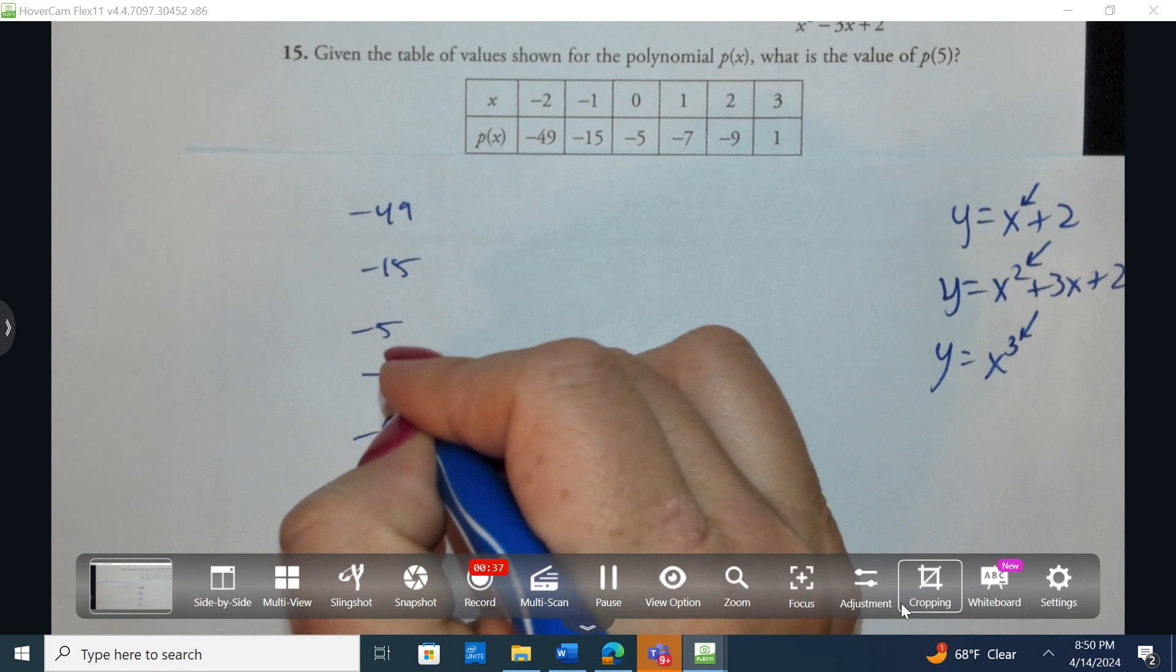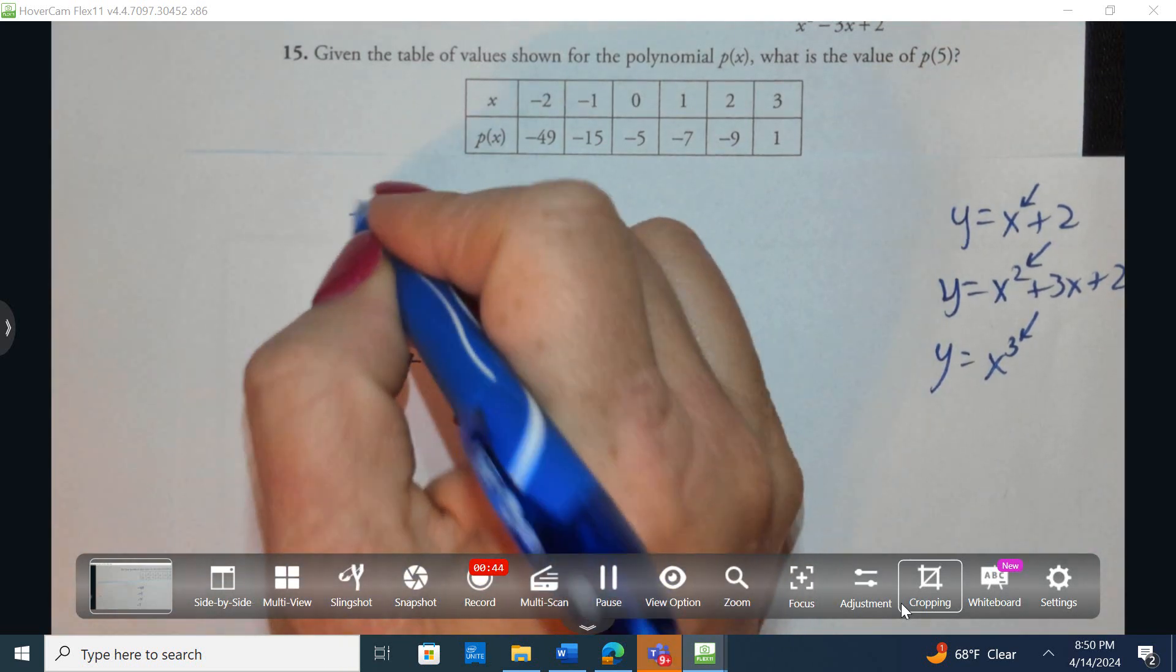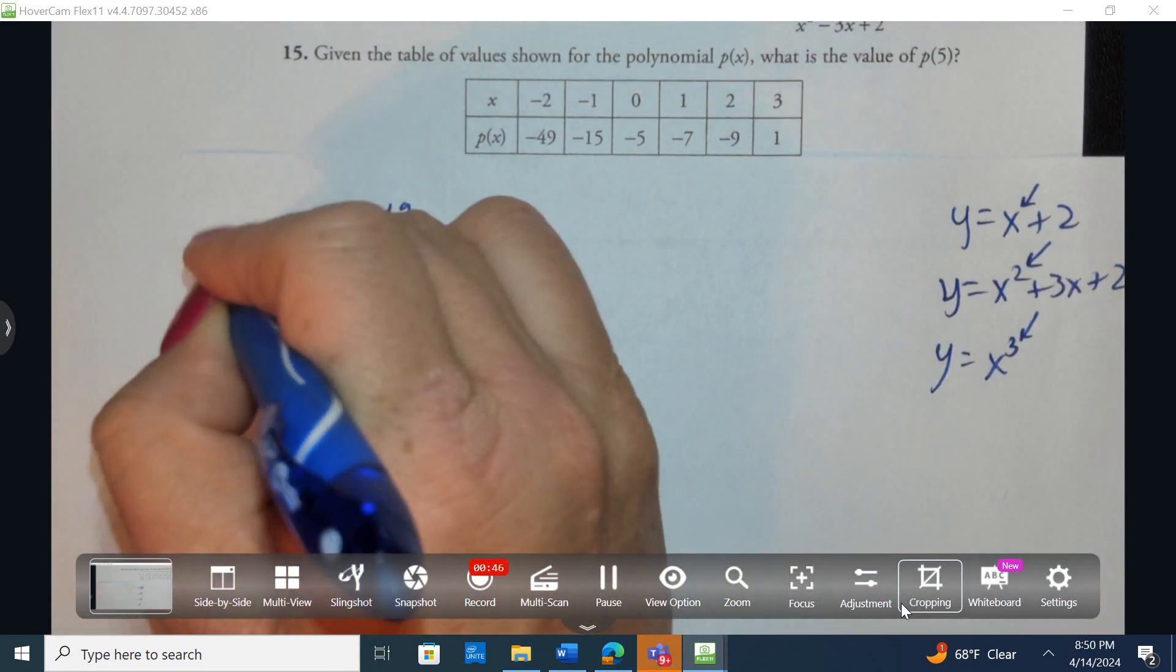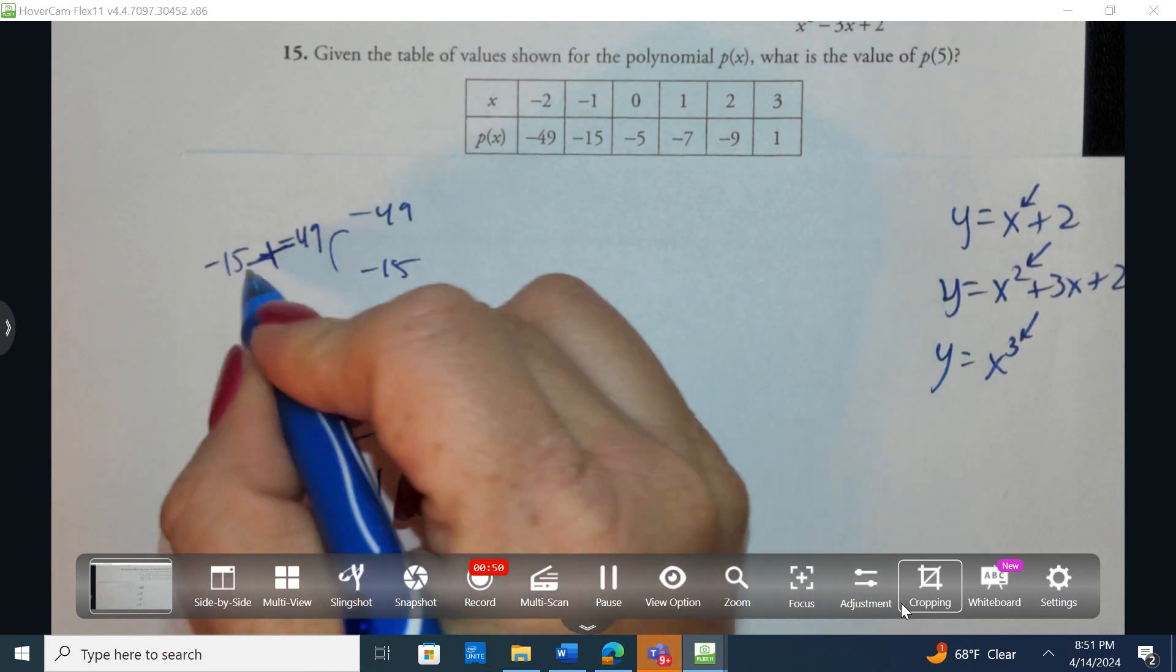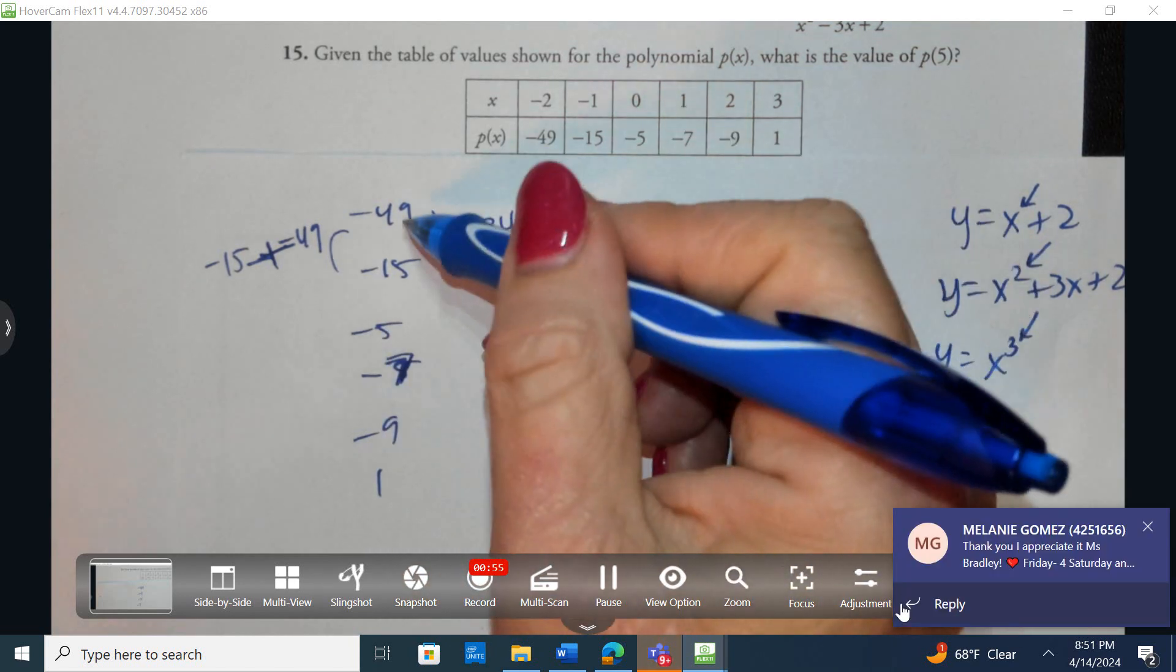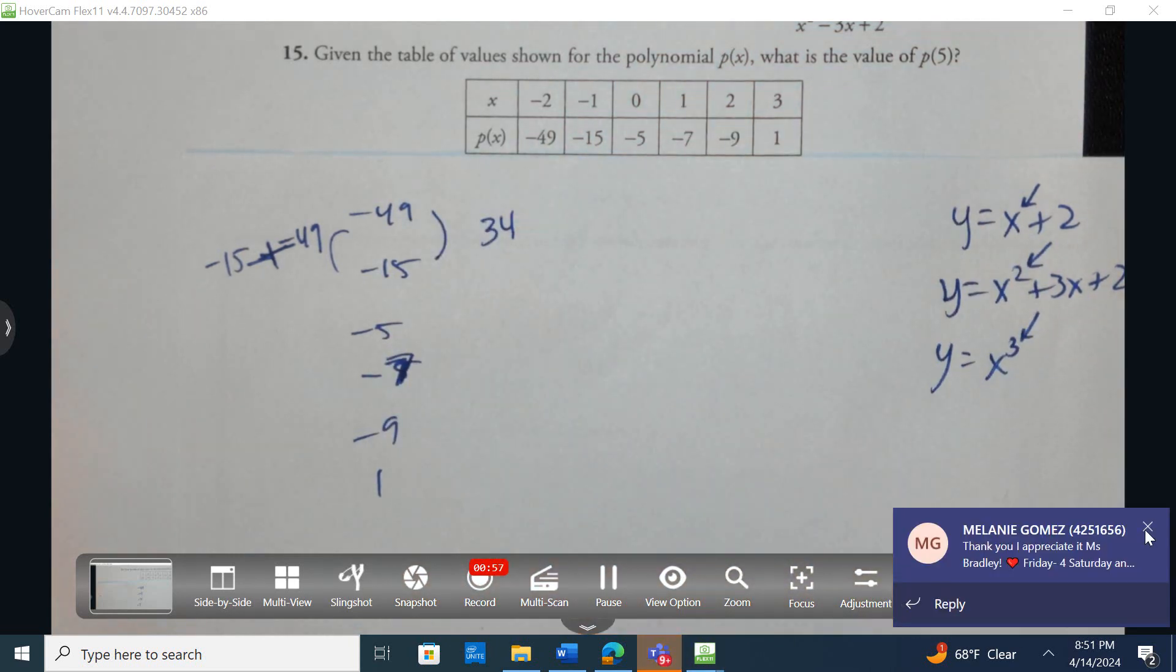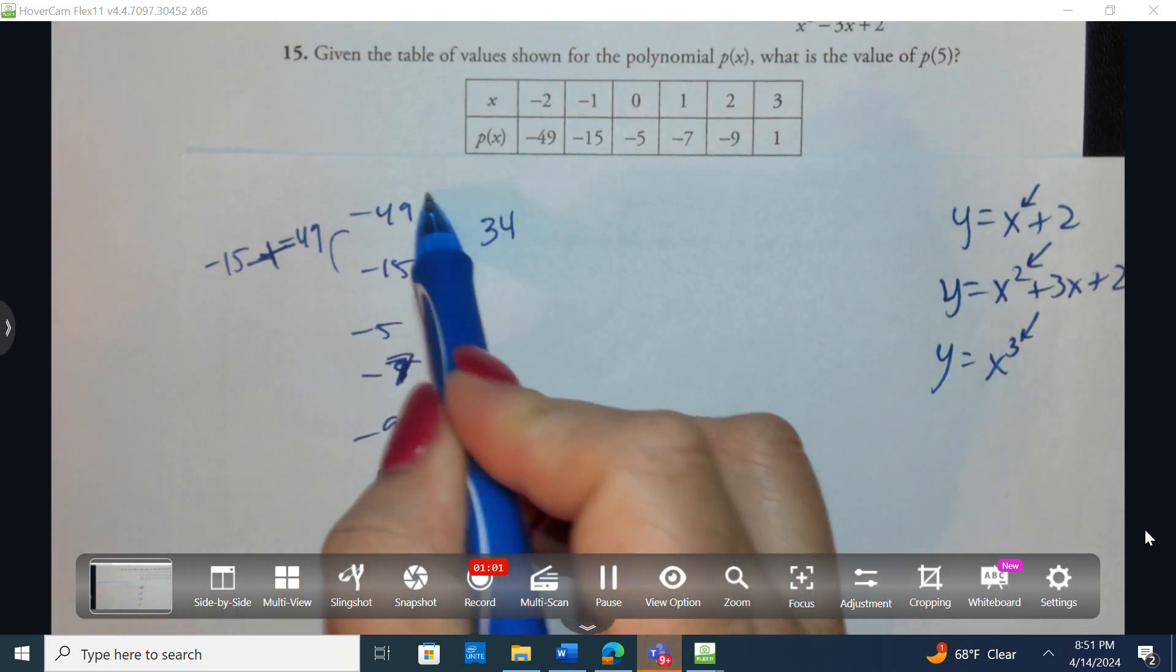And then I need to figure out when is the difference equal. To figure out this difference, I take the second number and subtract the first. So I take negative 15 subtract negative 49. Two negatives make a positive. They're a different sign, I subtract, keep the sign of the larger number. It's 34. That means to go from negative 49 up to negative 15, I'm adding 34.